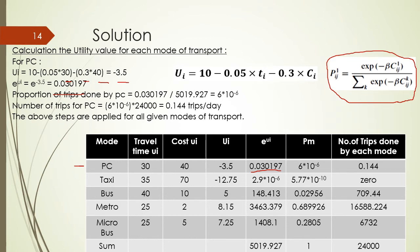We repeat those steps for different modes of transport. For the taxi, we replace 30 with 35 and 40 with 70 to get a utility of negative 12.75. Then e^(u_i) equals 2.9 × 10^(−6), and the proportion of trips done by taxi is 5.77 × 10^(−10).